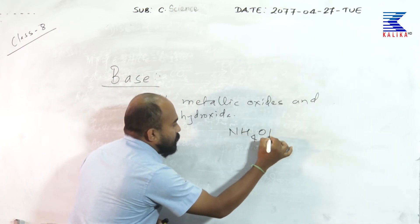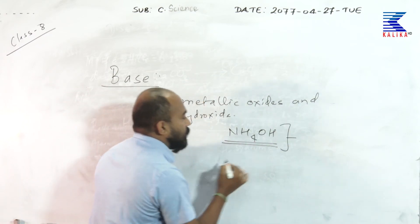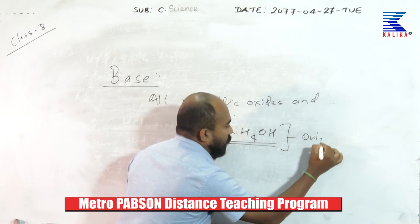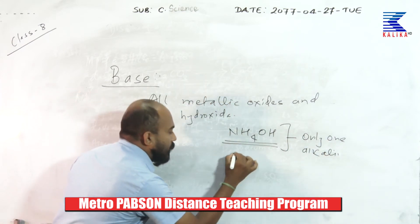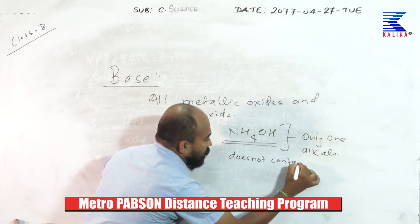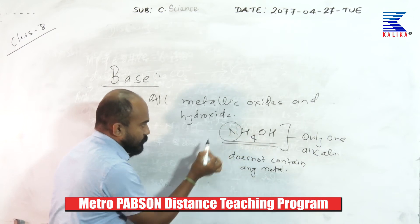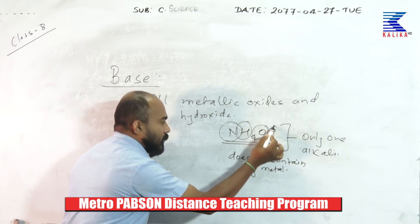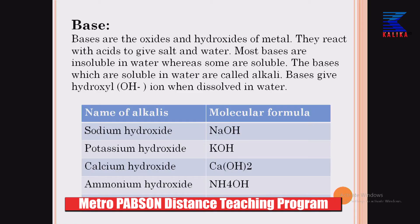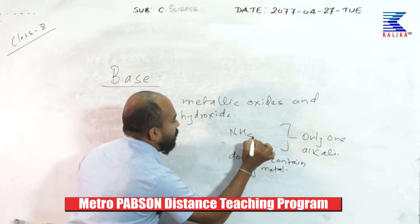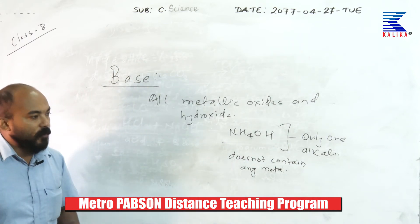Remember — ammonium hydroxide is the only alkali that does not contain any metal. Nitrogen is a nonmetal, hydrogen is a nonmetal, oxygen is a nonmetal, hydrogen is a nonmetal — yet ammonium hydroxide shows the properties of an alkali. This is the only alkali that does not contain any metal. Also, magnesium hydroxide Mg(OH)₂ is used to reduce or cure hyperacidity of the stomach.